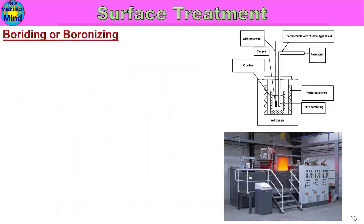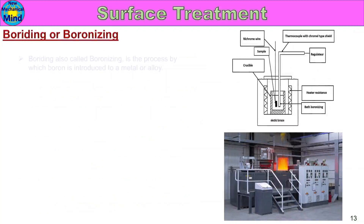Borating, also called boronizing, is the process by which boron atoms are introduced and diffused into the surface of a metal or alloy.